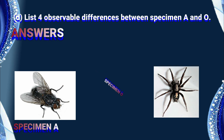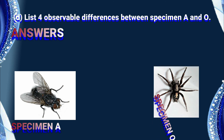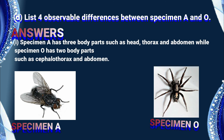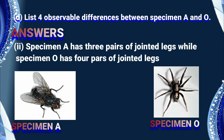The answer for question number four — list four observable differences between specimen A and specimen O. Consider only observable features. Difference one: specimen A has three body parts — head, thorax, and abdomen — while specimen O has two body parts — cephalothorax and abdomen. Difference two: specimen A has three pairs of jointed legs while specimen O has four pairs of jointed legs.